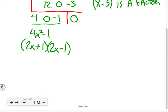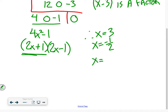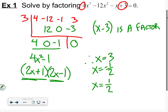It factors as (2x + 1)(2x − 1) — that's the difference of squares that a lot of you were having trouble seeing. So our solutions are: x equals three, x equals negative one-half (from 2x + 1 = 0), and x equals positive one-half (from 2x − 1 = 0). It was a bit harder because of the leading coefficient of four.